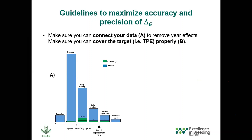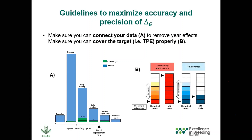This image is showing a good check replacement strategy and how to allocate different amounts of checks depending on the stage, by fixing certain percentages of entries to be checks. As the breeding scheme keeps moving, you need to have fewer and fewer checks — you don't want to have 10 materials and 10 checks. So adapt to have a good check strategy to make sure that not only genetic gain but other important analyses can be conducted by achieving connectivity.